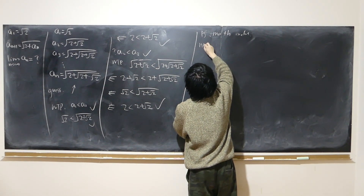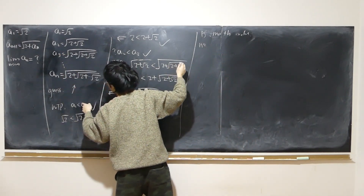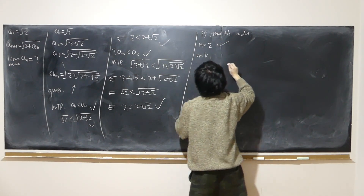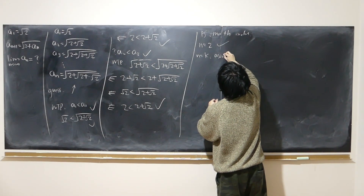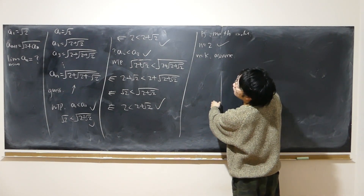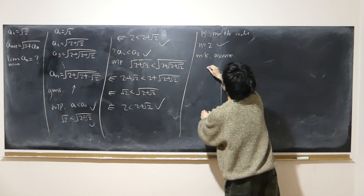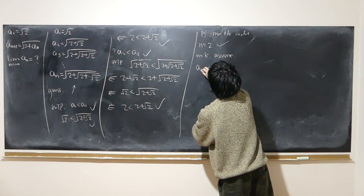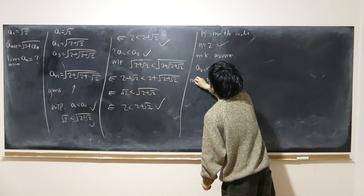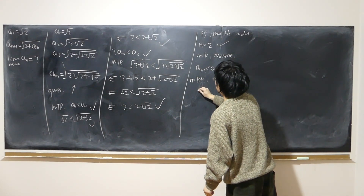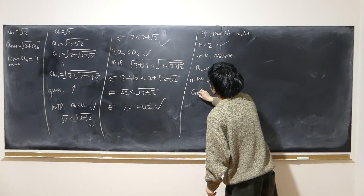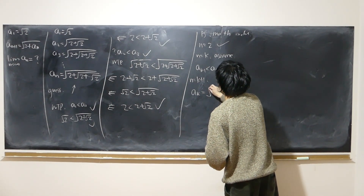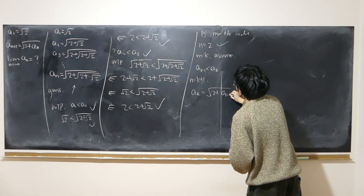To prove it rigorously, we use mathematical induction. When n = 2, it's true. We assume when n = k that a_{k-1} < a_k is true. We need to show that when n = k+1, a_k < a_{k+1}. Note that a_k = √(2 + a_{k-1}) by the recurrence formula.